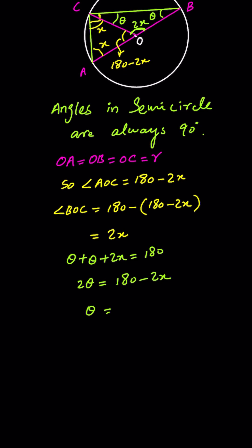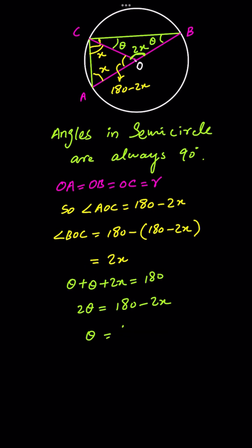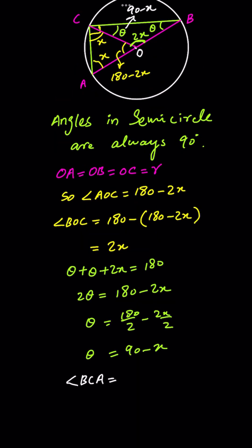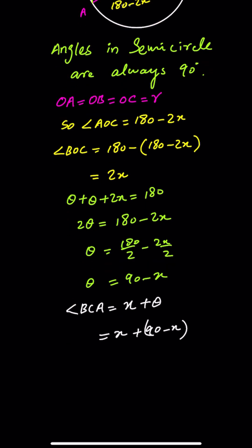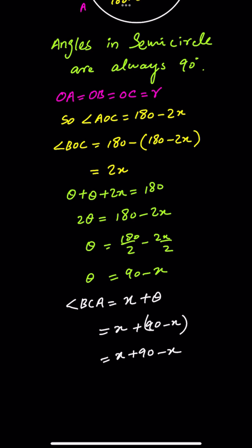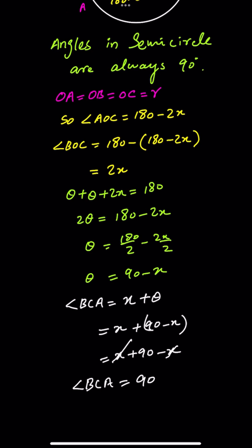We can say that theta equals (180 minus 2x) divided by 2. Dividing separately, this is 180 divided by 2 minus 2x divided by 2, which equals 90 minus x. So theta is equal to 90 minus x. Angle BCA equals x plus theta, and substituting theta as 90 minus x, we get x plus 90 minus x. The x cancels out, and angle BCA — the angle in a semicircle — is always equal to 90 degrees.